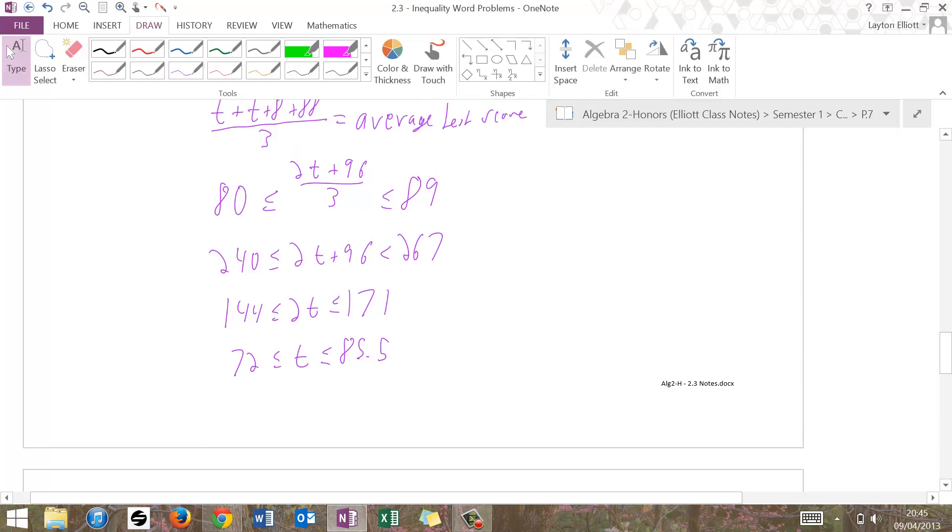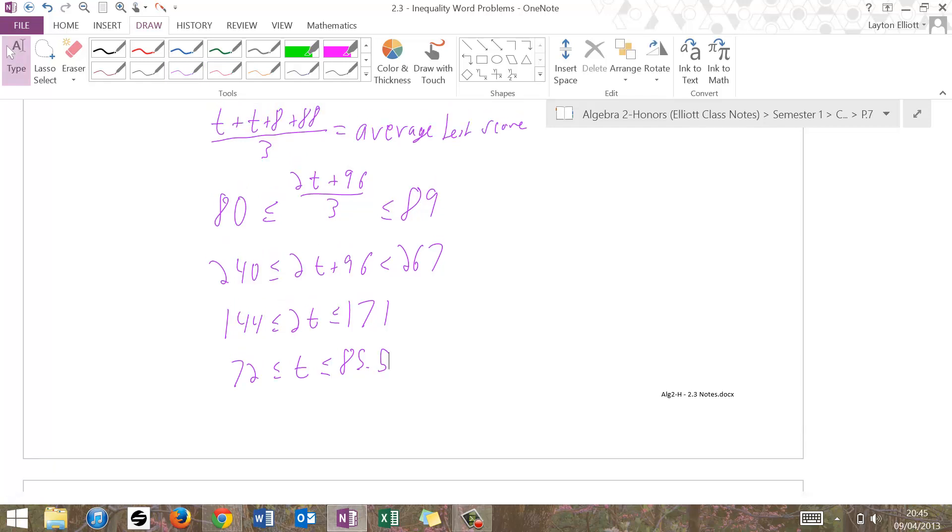So I know that since these are test scores, those can still be percentages. Jim scored in between 72 and 85.5, inclusive. We're going to want to use that word again because our solution includes that.